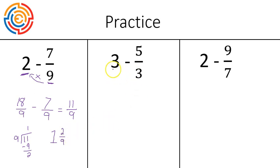In our next one, we're going to convert three into being a fraction of nine over three. We came up with the numerator by multiplying three times three, which gave us nine. Now we're subtracting five over three, which leaves us with four over three.